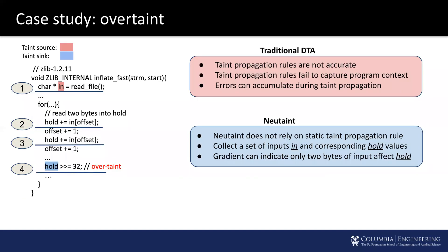We perform case studies to compare NeuTaint's performance against traditional dynamic taint analysis. The code snippet from zlib reads the file into BufferIn, which is the taint source. It periodically reads two consecutive bytes into a variable hold, which is the taint sink. At line four, variable hold is zeroed out by a shift operation. Traditional dynamic taint analysis cannot capture this semantic and leads to an over-taint issue. NeuTaint does not have this issue because it does not rely on static propagation rules — the gradient indicates only two bytes of the taint source affect the taint sink.